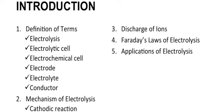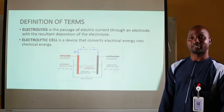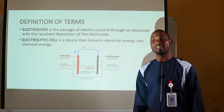This concept is broken down into subtopics. I'm going to start with the introduction, definition of terms, mechanism of electrolysis, discharge of ions, Faraday's laws of electrolysis, and of course the application of electrolysis. We are all very used to our bright cell batteries, where we use them to power our torchlights and other devices. You are quite aware that there are chemical substances in these batteries that convert chemical energy into electric energy. Today, we'll be looking at this concept properly, and I will break it down to your understanding.